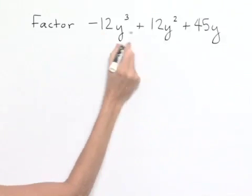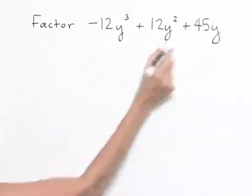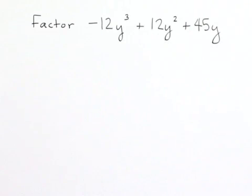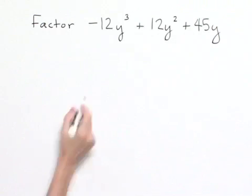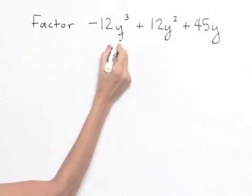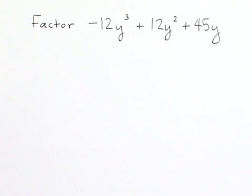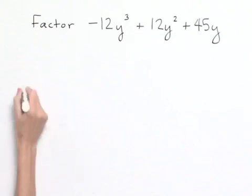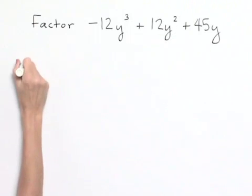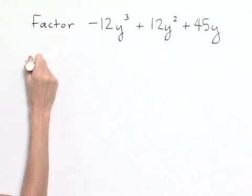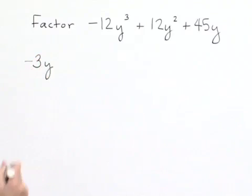We also note that we have a 12, a 12, and a 45 — there's a common factor of 3 with those three numbers. We also note that y cubed, y squared, and y has a common factor of y, leading us to the ability of factoring out a negative 3y from all three terms.